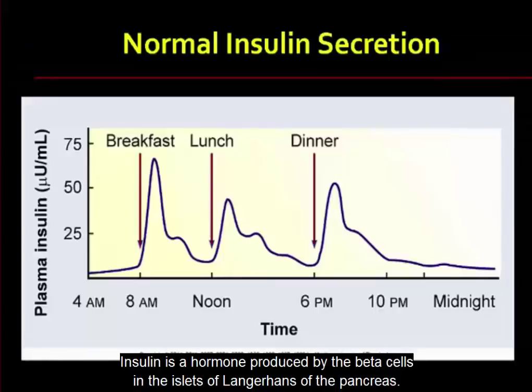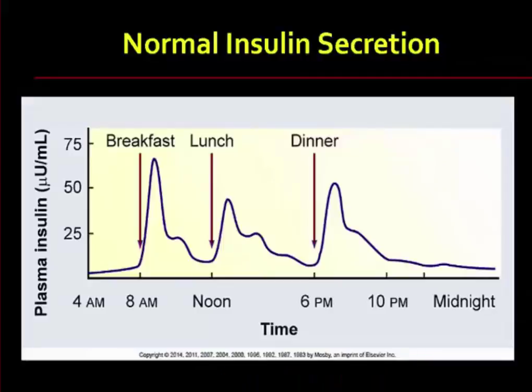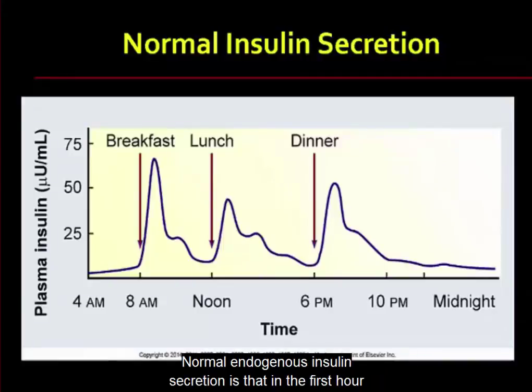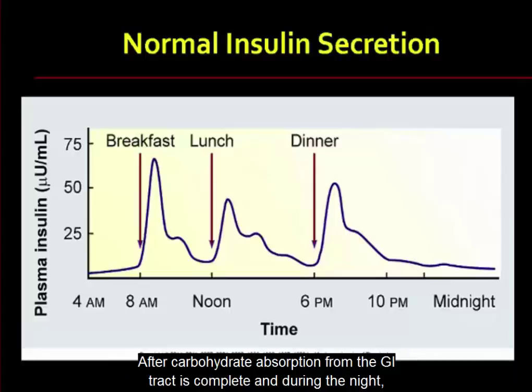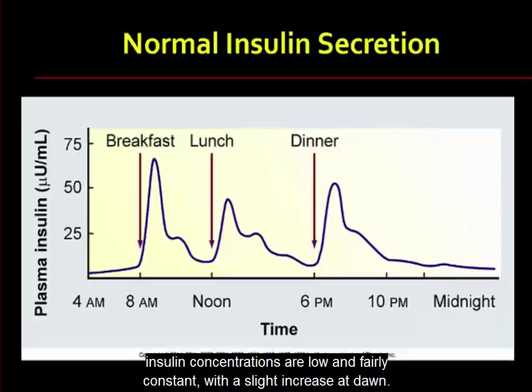Insulin is a hormone produced by the beta cells in the islets of Langerhans of the pancreas. Normal endogenous insulin secretion is such that in the first hour or two after meals, insulin concentration rises rapidly in the blood and peaks at about one hour. After carbohydrate absorption from the GI tract is complete and during the night, insulin concentrations are low and fairly constant, with a slight increase at dawn.